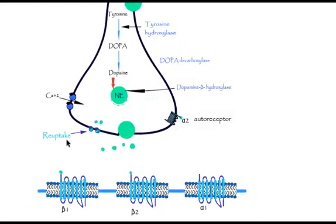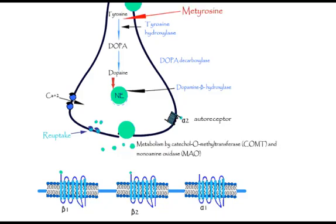Norepinephrine also diffuses out of the cleft and is metabolized by monoamine oxidase MAO and catechol O-methyltransferase COMT.